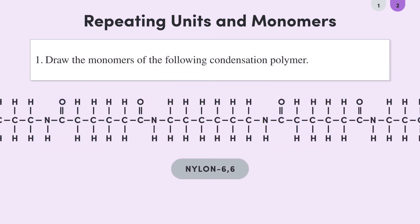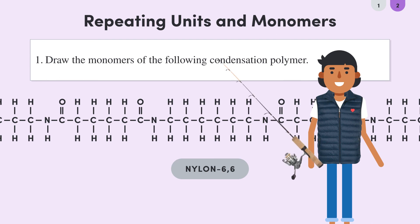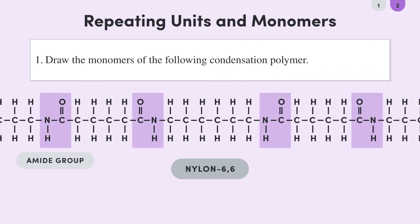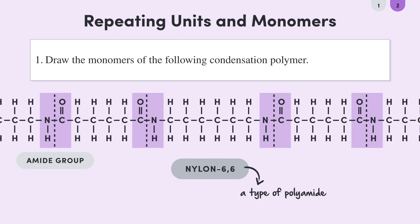Let's see how we can do that now with an example. Here we have nylon, which may sound familiar since it's used to make clothes, fishing lines, and guitar strings. Looking at the polymer, we can see that we've got a few amide groups, so this must be a polyamide. Go check out the previous video on condensation polymers if you need a refresher. Let's see what we get if we split these amide groups down the middle, because this is where the original functional groups — which would have been carboxyl and amine groups — joined together.